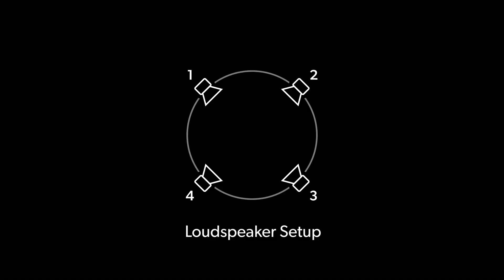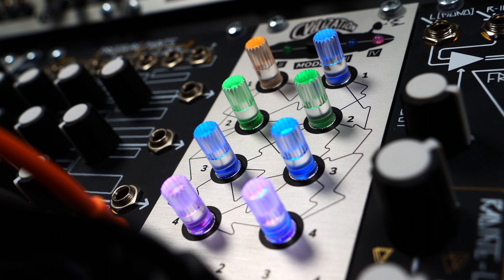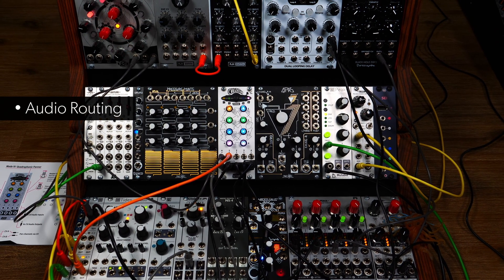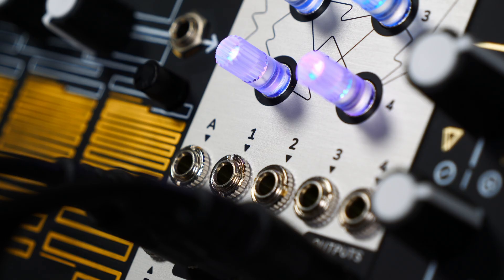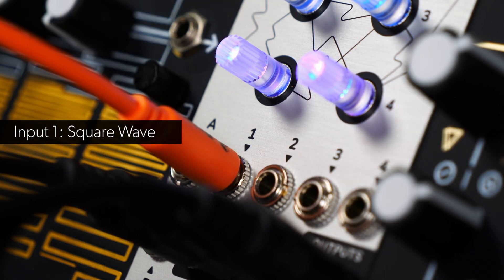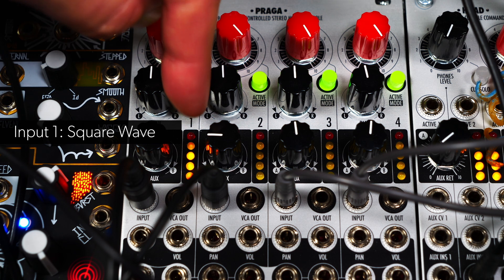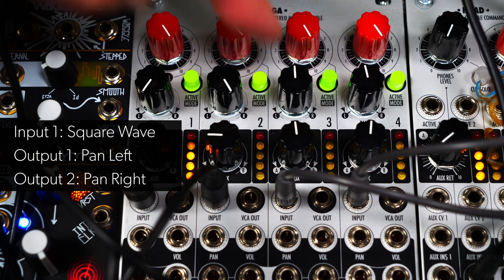Since it would be impossible to demonstrate the experience of a 4-channel loudspeaker setup in a video clip, we'll show you what you can accomplish with a stereo setup instead. Let's start with a simple patch illustrating the audio routing capabilities of Mode 4. We'll take a square-wave signal and feed it into input 1. Out 1 is panned hard left, out 2 hard right in our stereo mix.